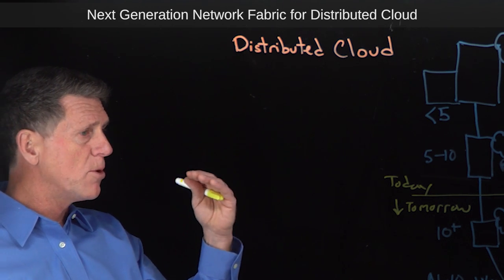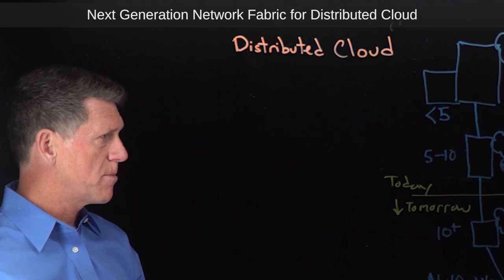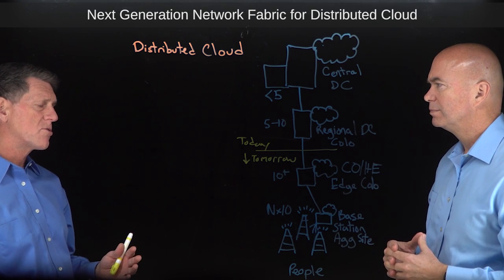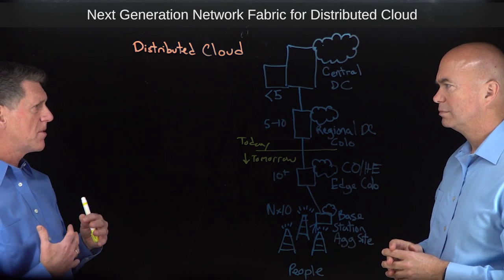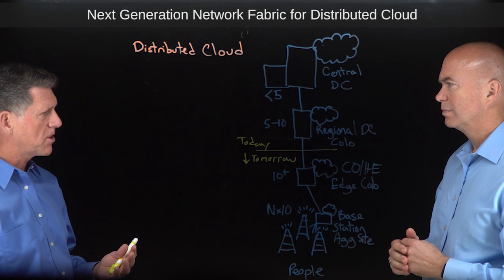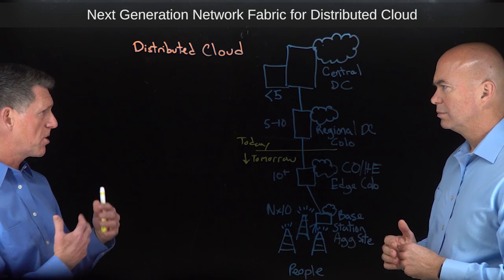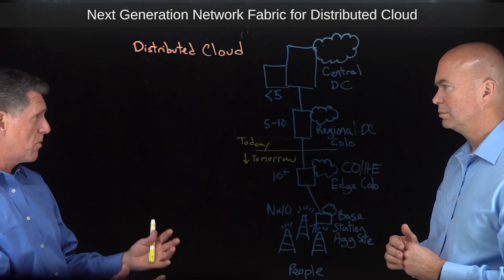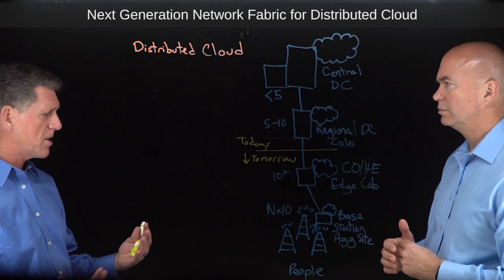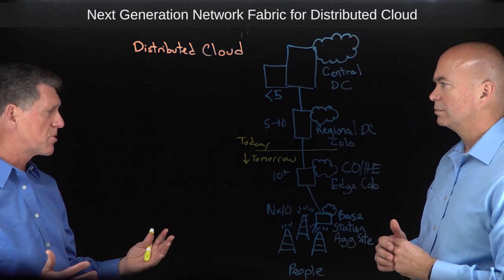What you can see is there are multiple edges, and we're using the term 'distributed cloud.' The reason we call it distributed cloud is the edge compute locations are there, but the consumption model we think is really going to be cloud-based — you'll be able to spin up containers, deploy your workload to the right edge location, and turn it down when you're done and just pay for what you use. Edge compute plus the cloud consumption model equals distributed cloud.